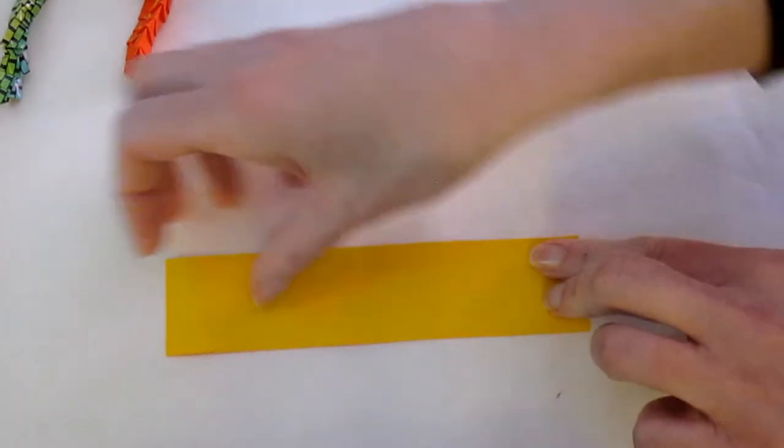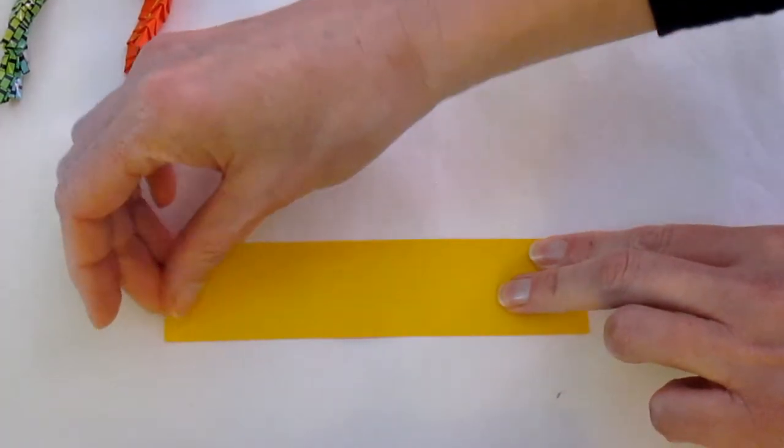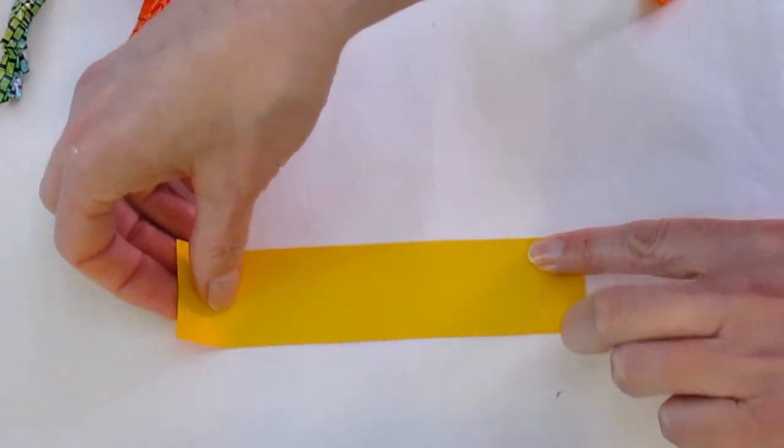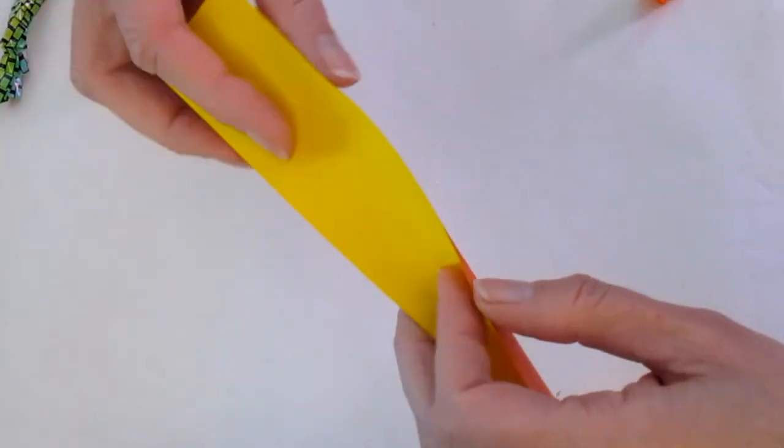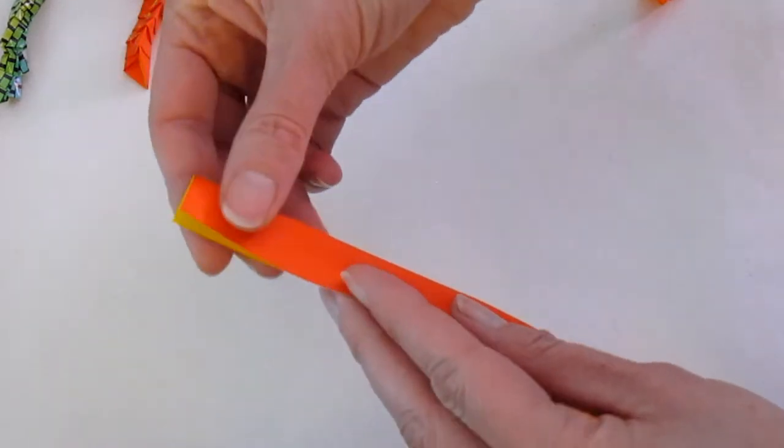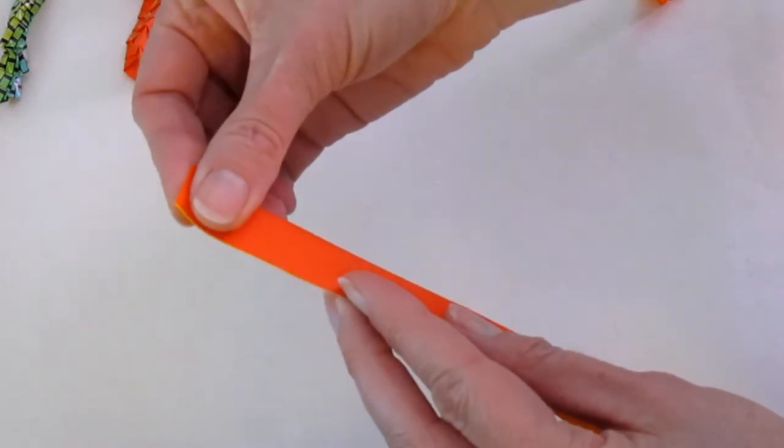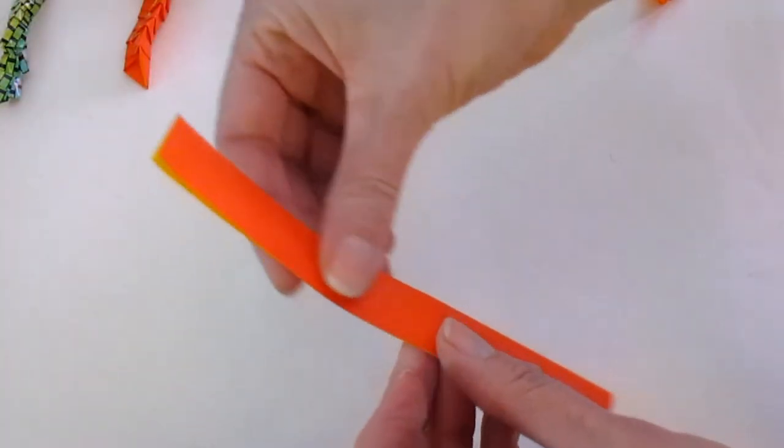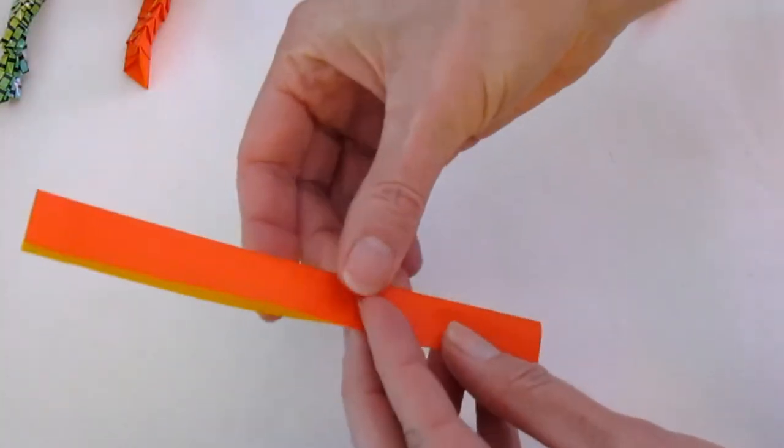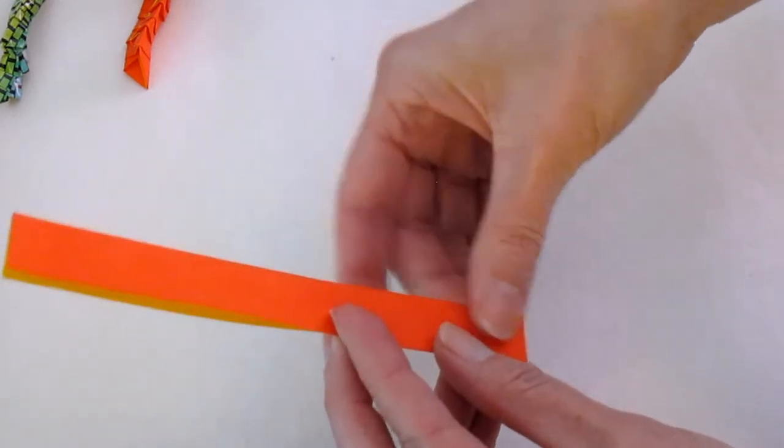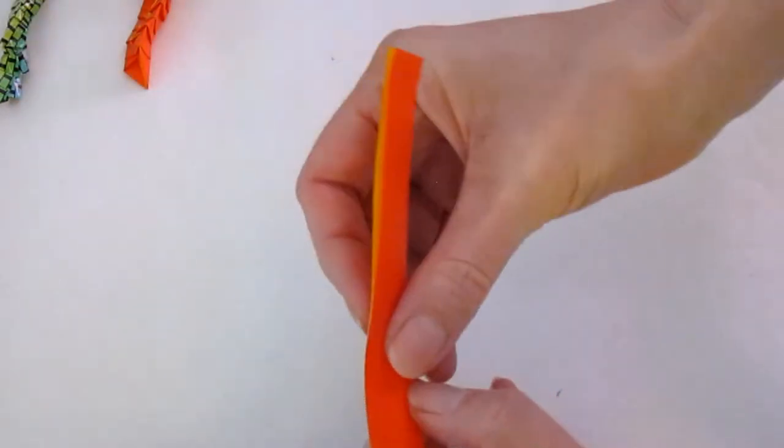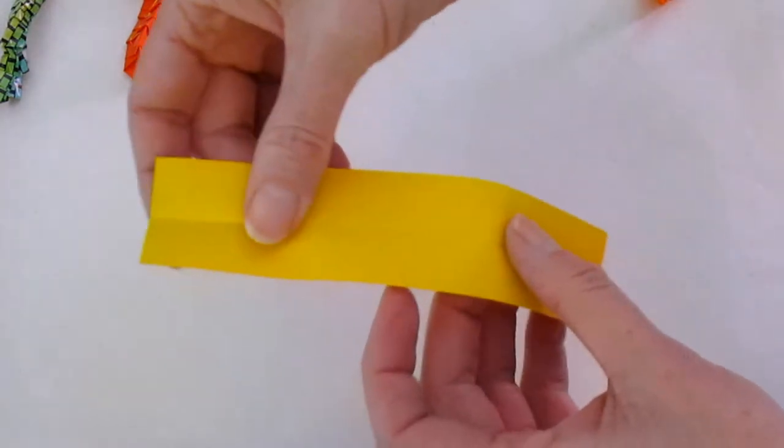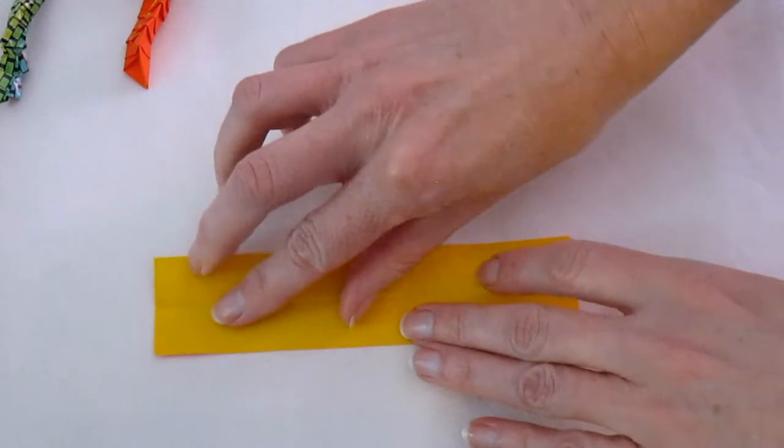So we start with our very long rectangle. First thing I want you to do is fold it in half lengthwise, in a valley fold, and line up the corners there. Kids sometimes call this hot dog fold. So fold it lengthwise along there, and then open it back up again after you finish that crease.